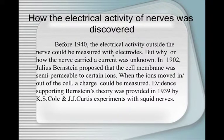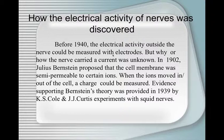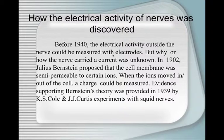Before 1940, electrical activity outside the nerve could be measured with electrodes, but why and how the nerve carried current was unknown. In 1902, Julius Bernstein proposed that the cell membrane was semi-permeable to certain ions, and when the ions moved in and out of the cell, the charge could be measured. Evidence supporting this was provided by the K.S. Cole and Curtis experiments with squid nerves.